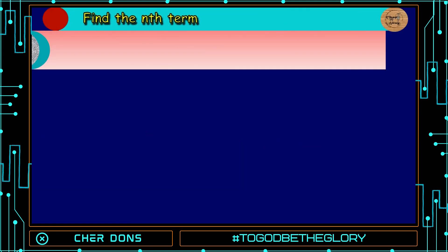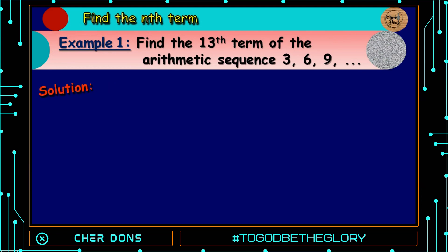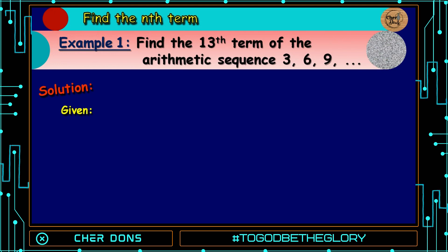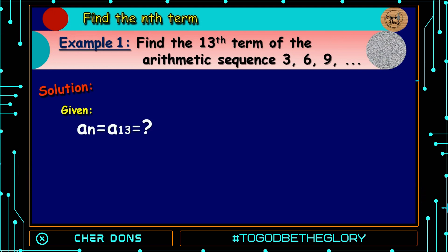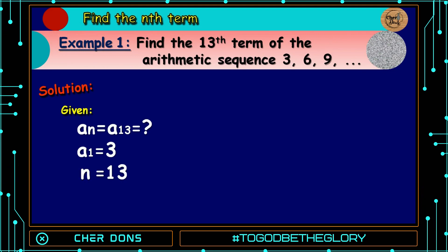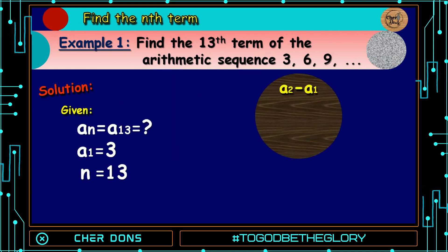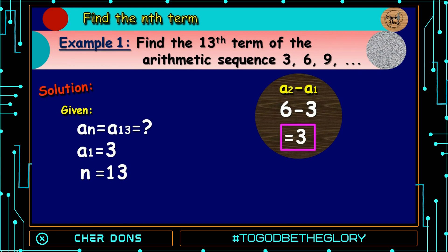Finding the nth term — Example 1: Find the 13th term of the arithmetic sequence 3, 6, 9, and so on. Solution: a sub n equals a sub 13, which is unknown. A sub 1 is 3, n is 13. The common difference is A2 minus A1, that is 6 minus 3, which equals 3. So d is equal to 3.